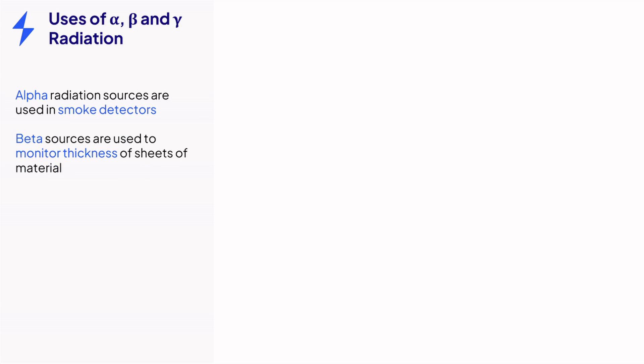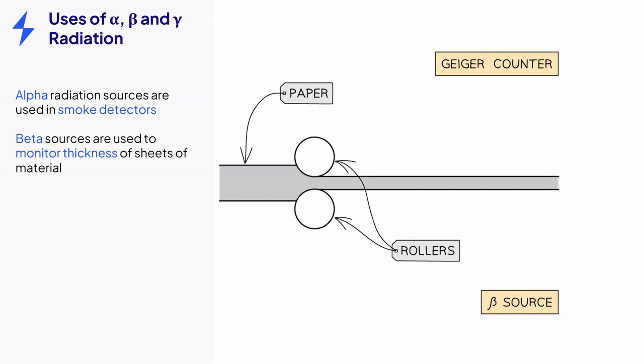One use of beta radiation is to control the thickness of certain materials such as paper. The thickness can be measured by how many beta particles pass through it each second.